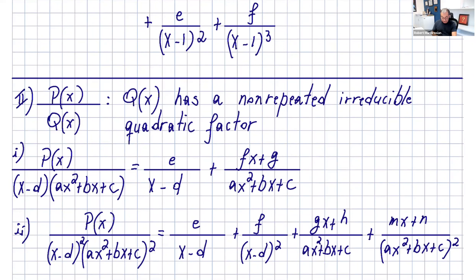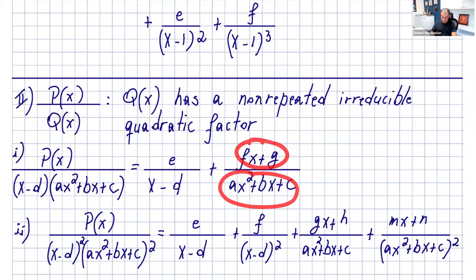Now let's say q of x has a non-repeated irreducible quadratic factor. You have p of x over x minus t times ax squared plus bx plus c, where solving that quadratic gives complex zeros — we don't want that since we're working with real numbers. The way you write that decomposition is e over x minus t plus fx plus g over ax squared plus bx plus c. Notice this denominator is quadratic, so the numerator is linear — one degree less.